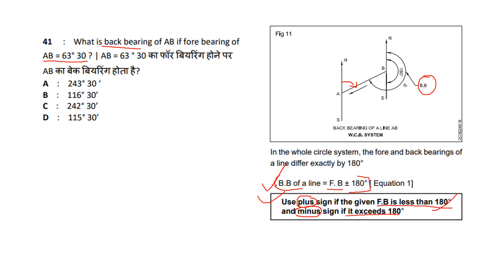So back bearing equals fore bearing plus 180 degrees. The fore bearing is 63 degrees 30 minutes, so back bearing equals 63°30' plus 180°, which gives 243 degrees 30 minutes.